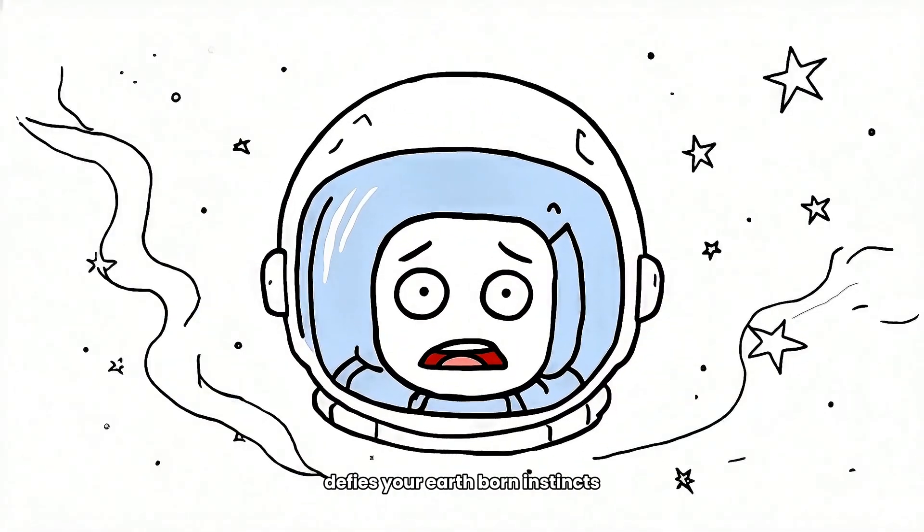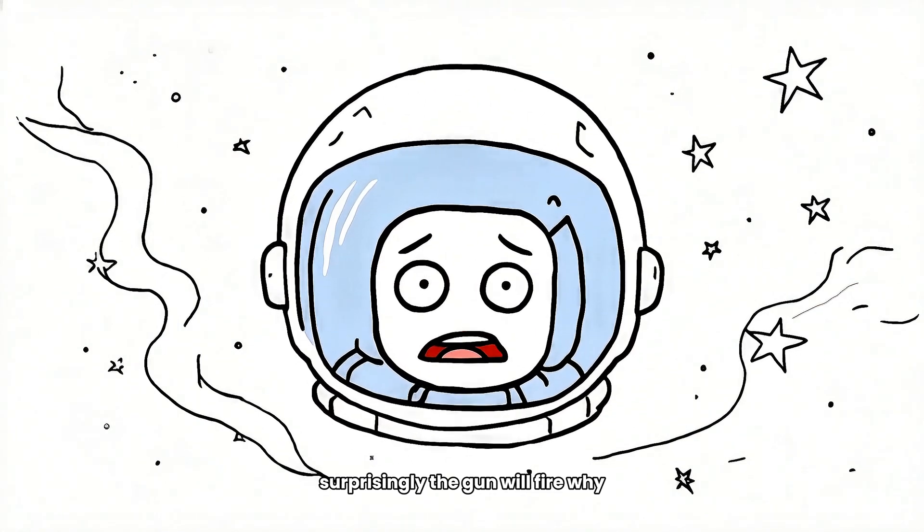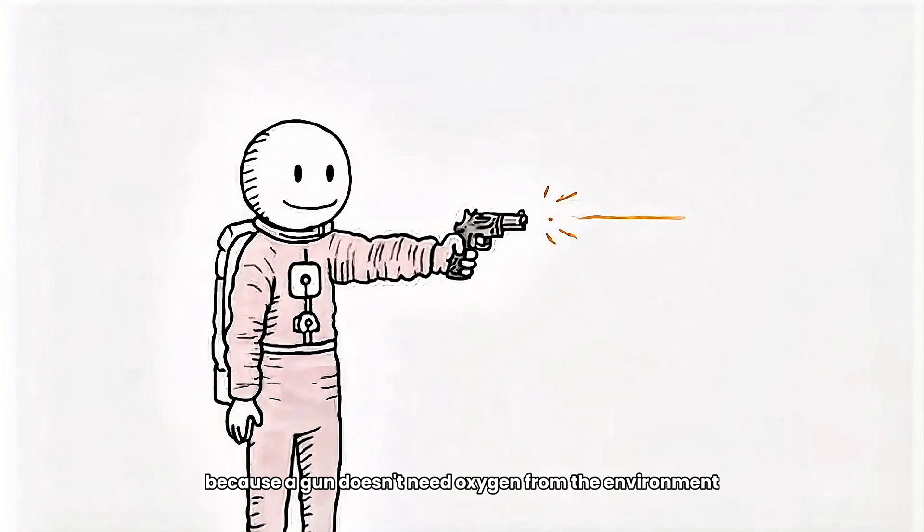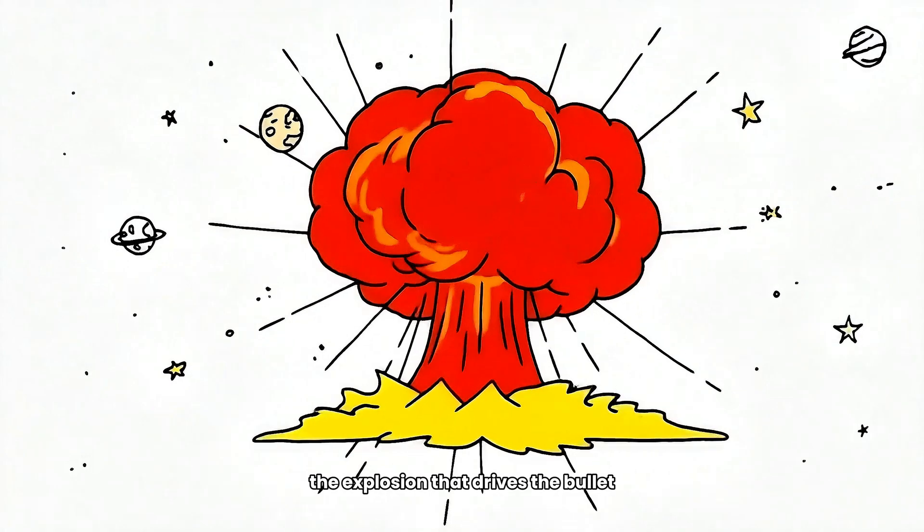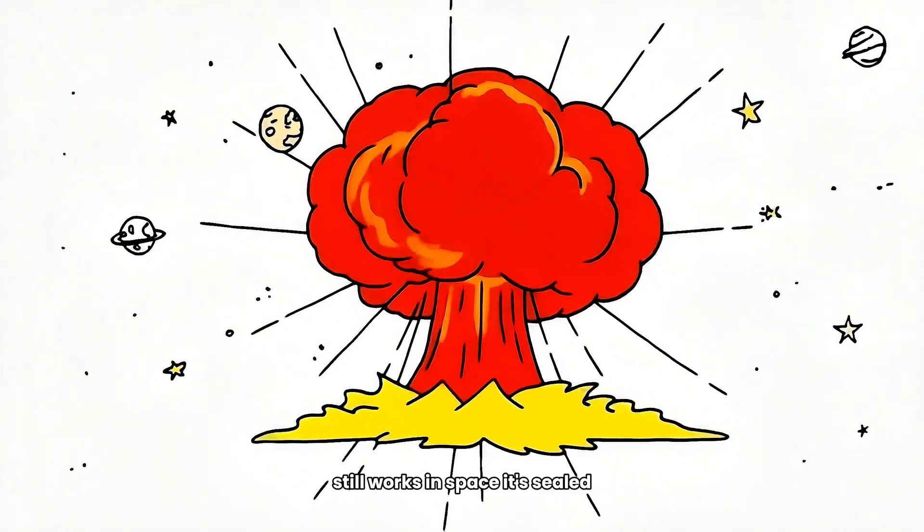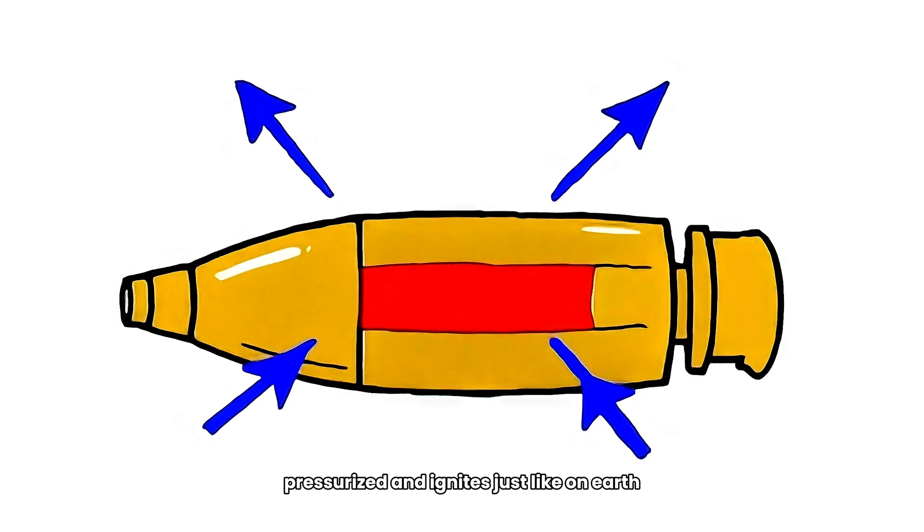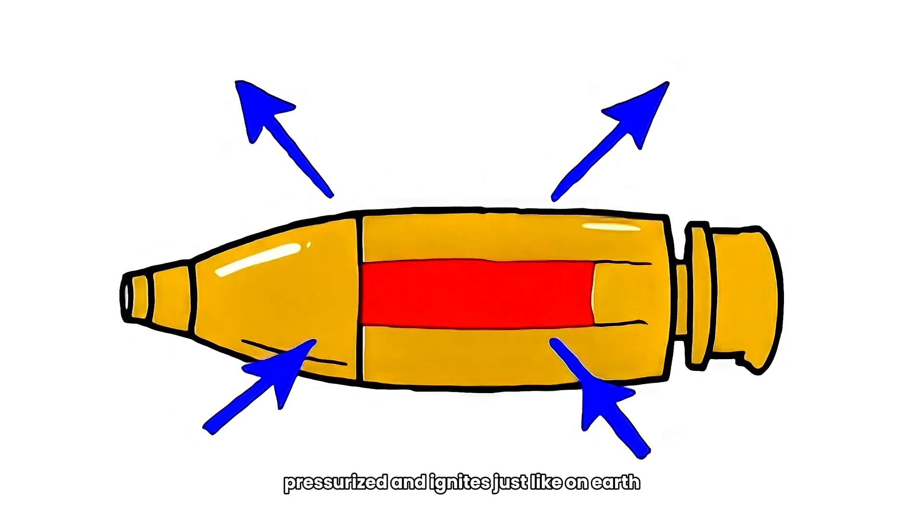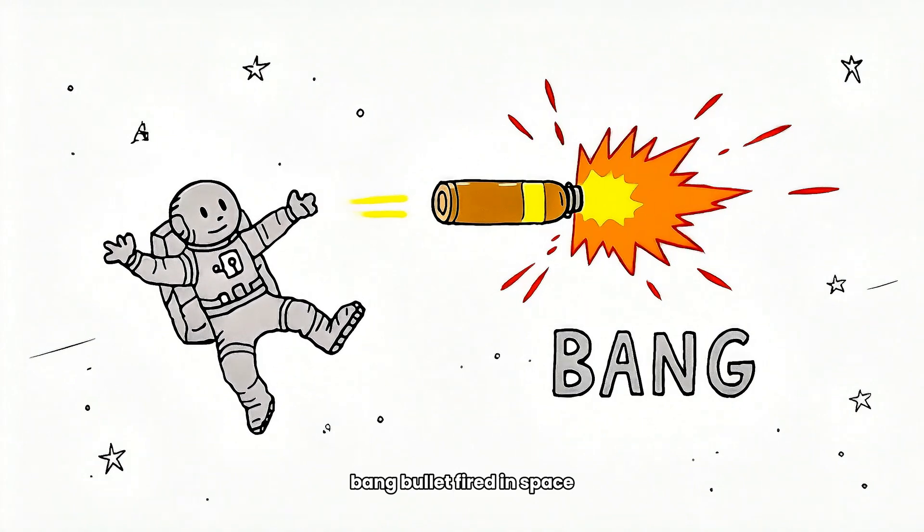What happens in that instant defies your earth-born instincts. Surprisingly, the gun will fire. Why? Because a gun doesn't need oxygen from the environment. The gunpowder inside the bullet casing carries its own oxidizer. That means chemical combustion, the explosion that drives the bullet, still works in space. It's sealed, pressurized, and ignites just like on earth. So yes, bang, bullet fired, in space.